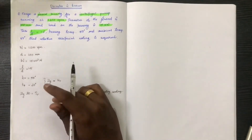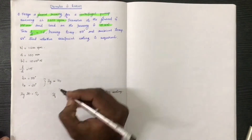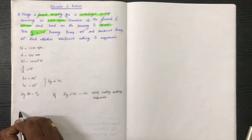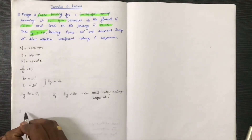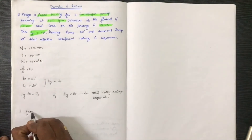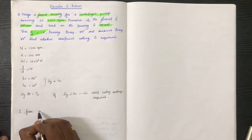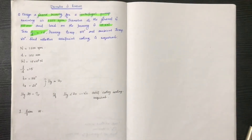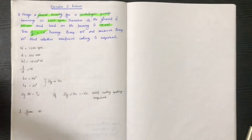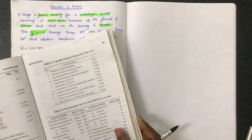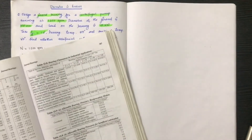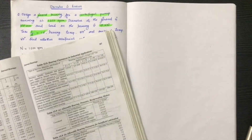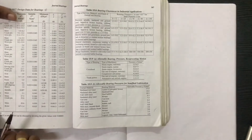First of all, we have to go to the table — the left table. From the table, for a centrifugal pump, this is the next table entry.